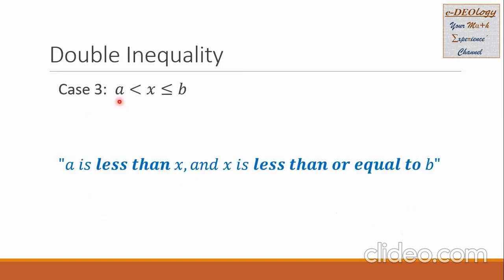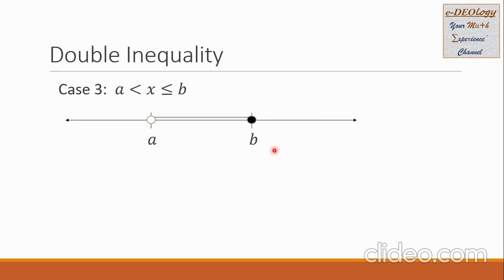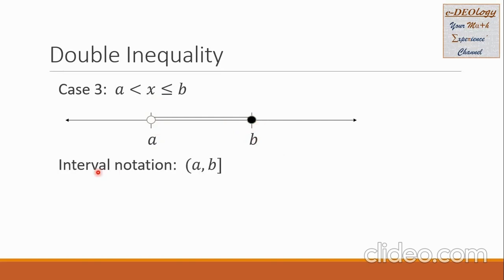Case 3: a is less than x and x is less than or equal to b. On the number line, the two numbers a and b are placed with a on the left side as the lower number. We connect the two numbers. For a, we put a hole because it is not part of the solution set. For b, there is a solid dot because b is part of the solution set. For the interval notation, we write the end numbers a and b. For a, we use parentheses because a is not part of the solution set. For b, we use a square bracket, meaning b is part of the solution set.